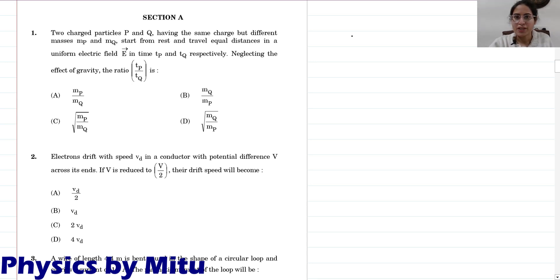Two charged particles P and Q have the same charge but different masses. Starting from rest, they travel equal distances in uniform electric field E in time tp and tq. You have to find ratio of tp and tq.